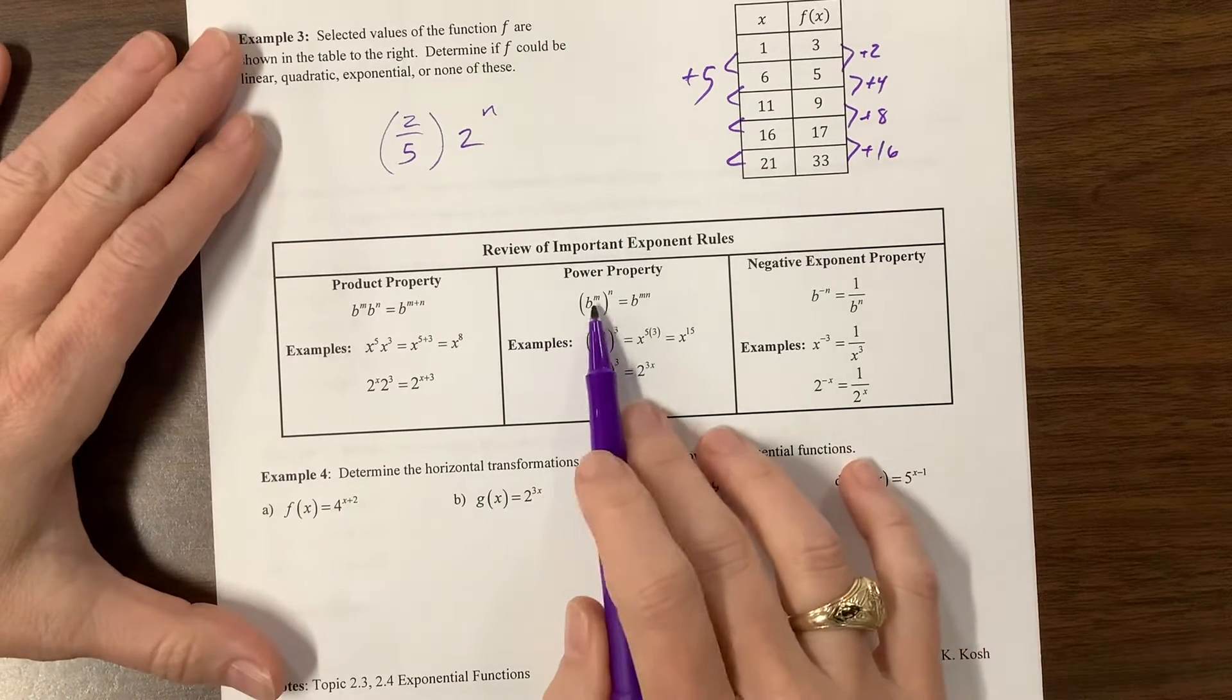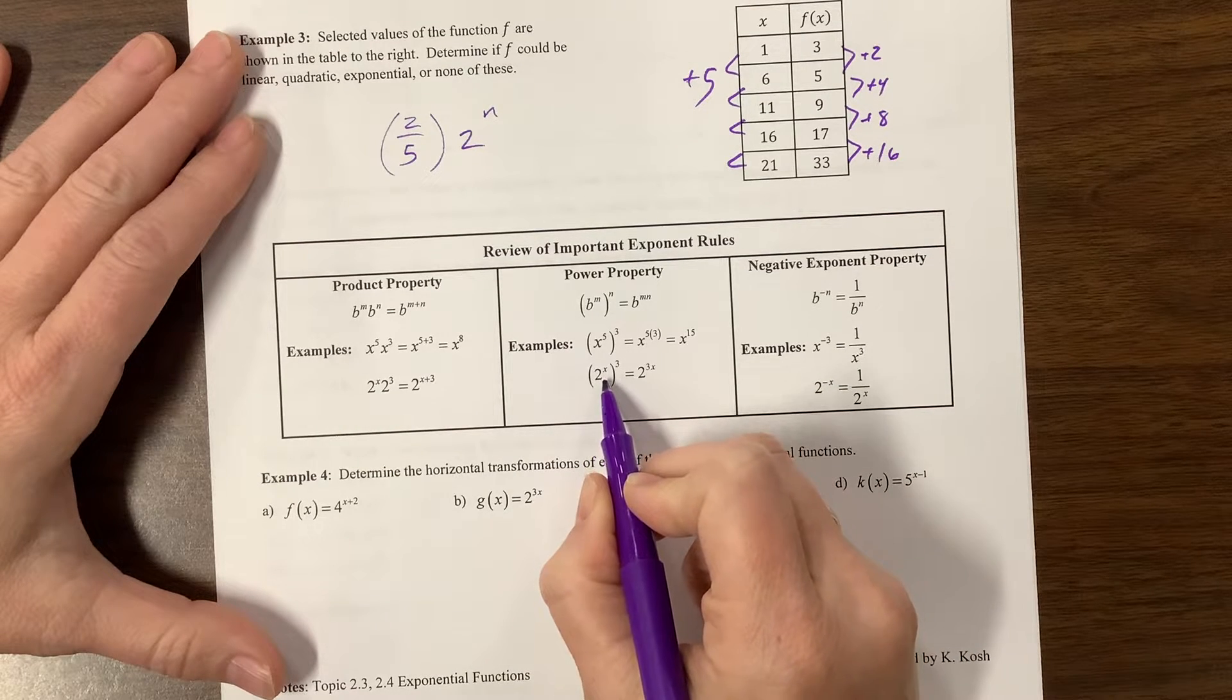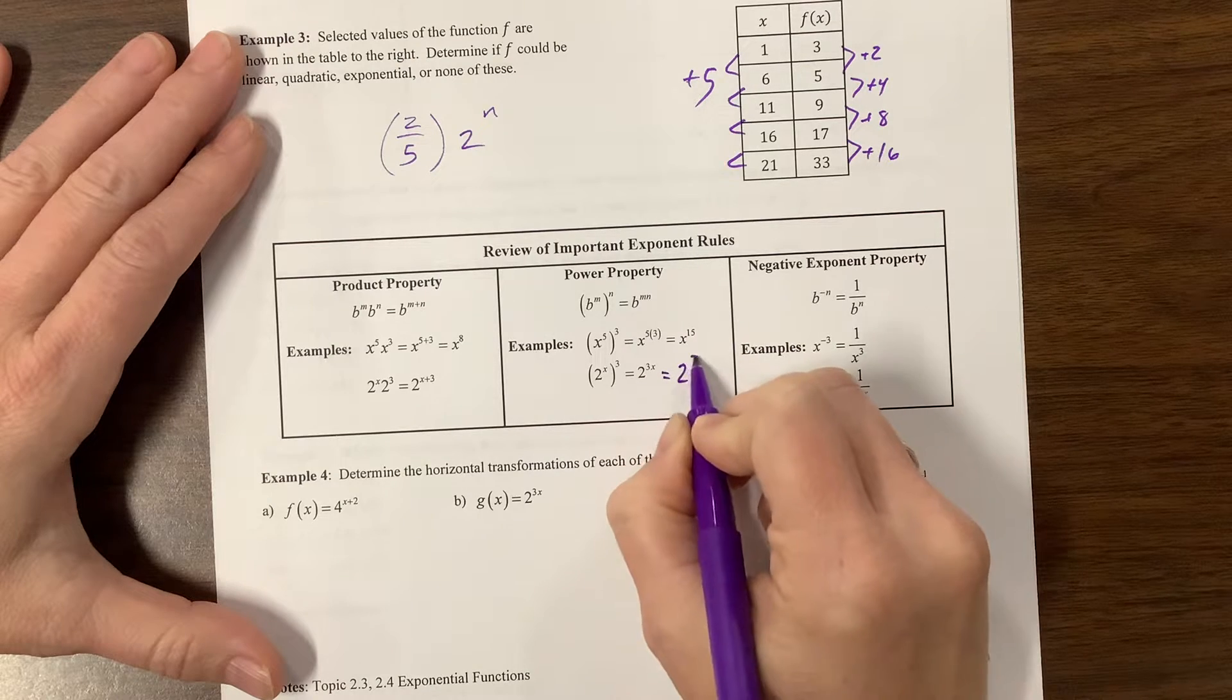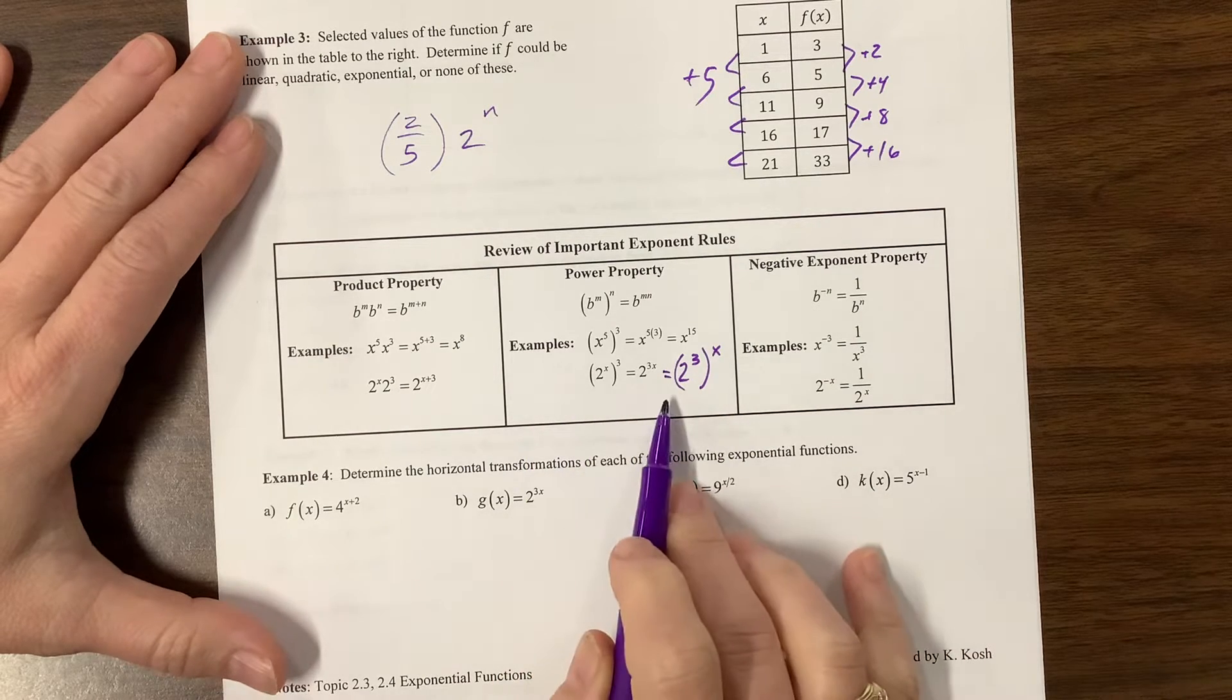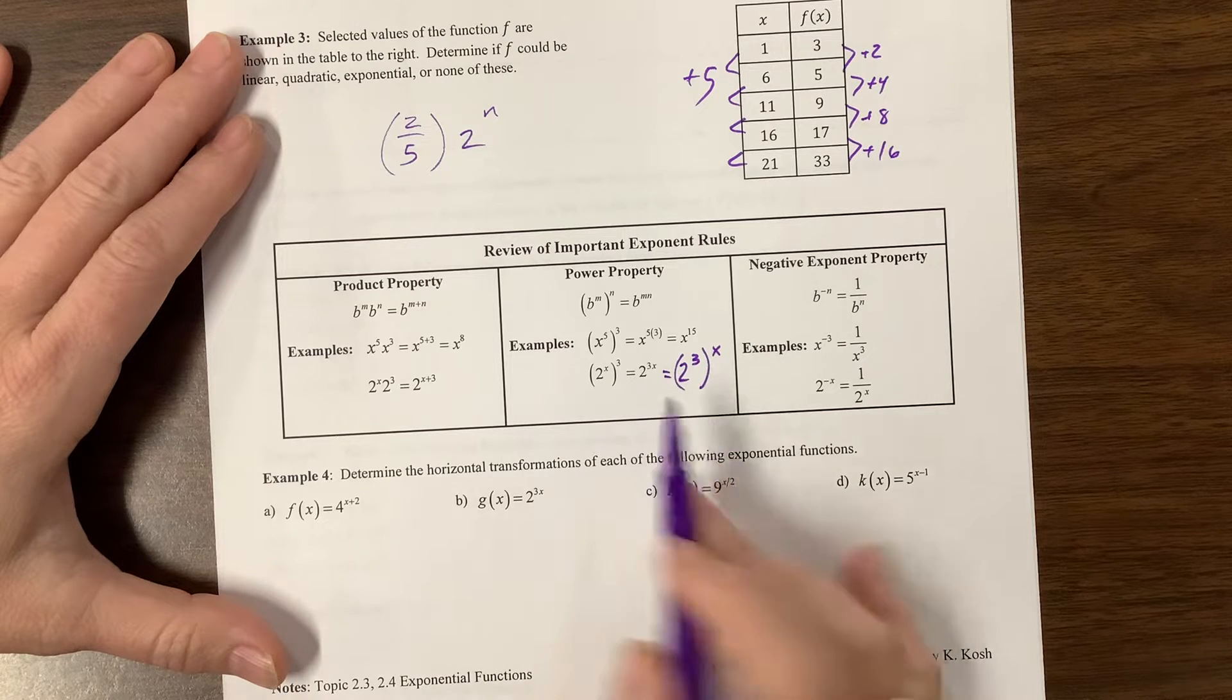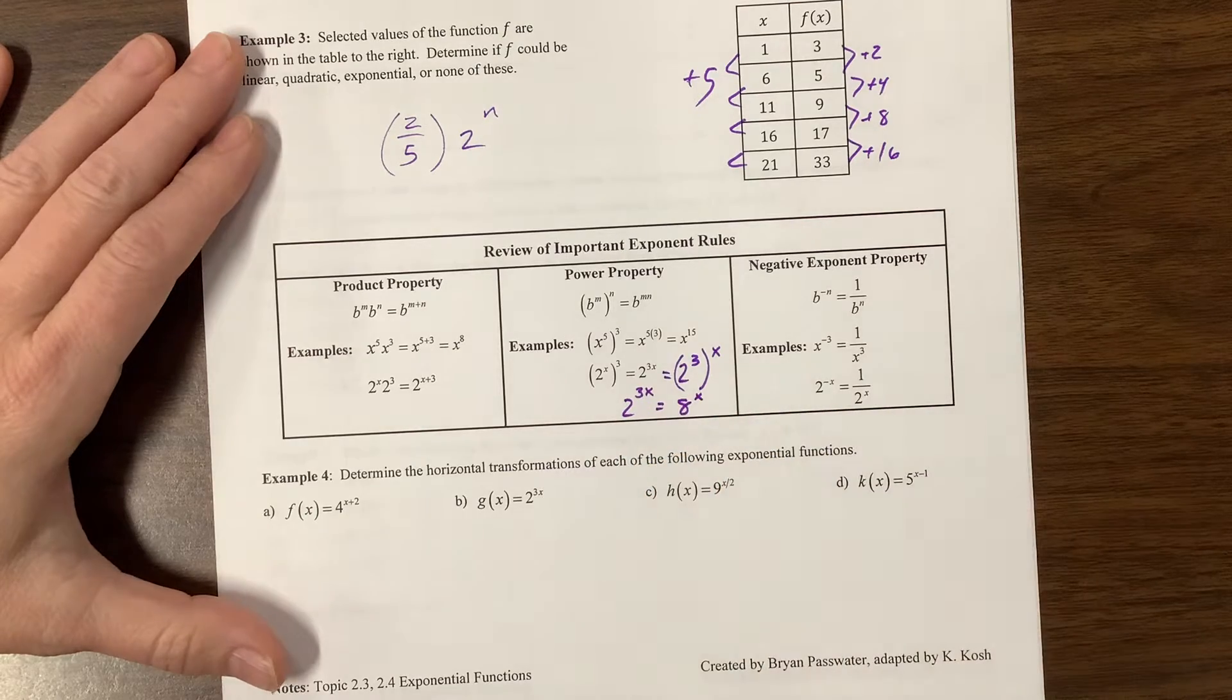And the power property, if I have a power to a power, I multiply. So the cool thing about this one is 2^x to the third is 2^(3x), but it's also equal to 2^3 to the x. So 3 times x is still 3x. And we're going to see later in this video that this is going to be really helpful, that we can see that this 2^(3x) is equivalent to 8^x, which is going to be helpful.